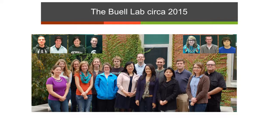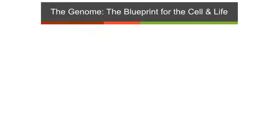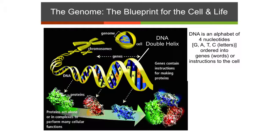So I work on genomics, and the genome is essentially a representation of the blueprint of any cell — whether it's a bacteria, a virus, an animal, or a plant. Essentially, your genome is the DNA. It's an alphabet of four different letters, and those are instructions for the cell on how to grow, divide, replicate, reproduce, and deal with and adapt to stress. In eukaryotes, like plants and us, the DNA is packaged into chromosomes.